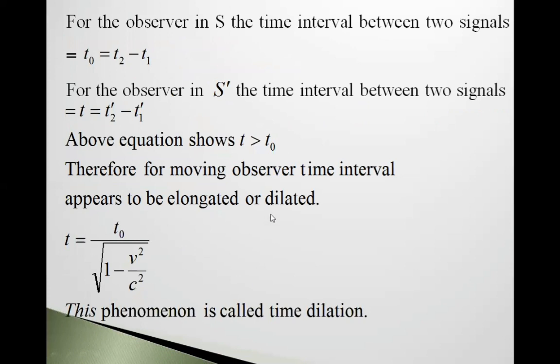So friends, for the observer in S, the time interval between two clock signals, two light pulses, is given by T₀ equals T2 minus T1.